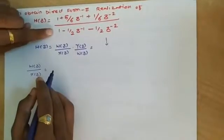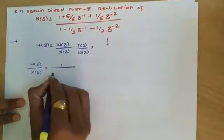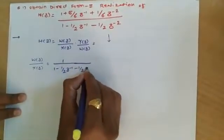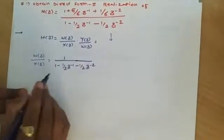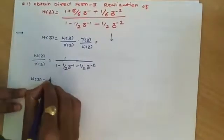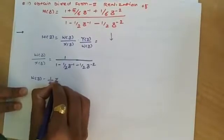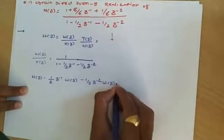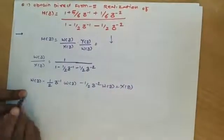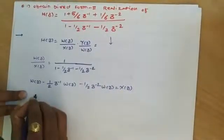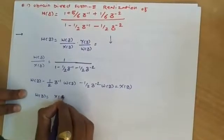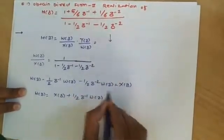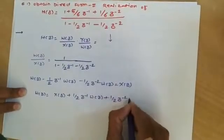For the all-pole system W(z)/X(z), the denominator terms are: 1 minus (1/2)z⁻¹ minus (1/2)z⁻². After cross-multiplying, we get W(z) minus (1/2)z⁻¹·W(z) minus (1/2)z⁻²·W(z) equals X(z). Now we shift all the delay elements to the right side, so the equation becomes W(z) equals X(z) plus (1/2)z⁻¹·W(z) plus (1/2)z⁻²·W(z).